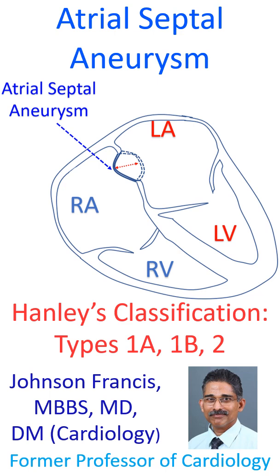Type 2 had markedly redundant fossa ovalis membrane protruding maximally into the left atrium, with a total amplitude of phasic excursion of more than 1.5 cm.